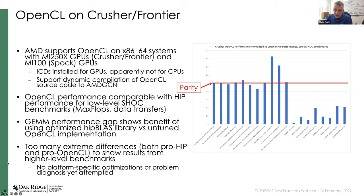To answer a question from the chat: yes, it was a home-rolled DGEMM in the OpenCL version rather than using clBLAS, which is why the OpenCL version performs so much worse than the HIP version for that benchmark.